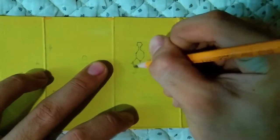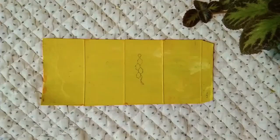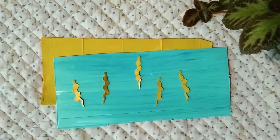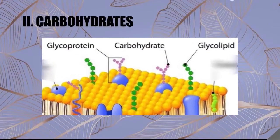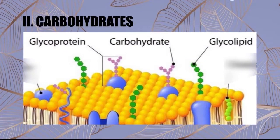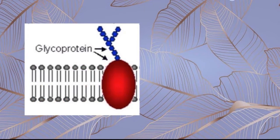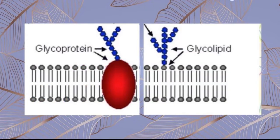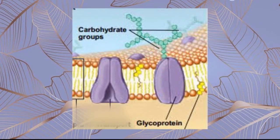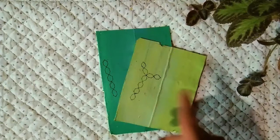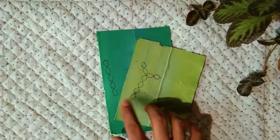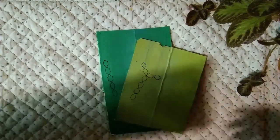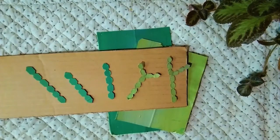Taking the cholesterol, draw its shape on the painted cardboard and cut. Remember that they can be either straight or branched, just like the reference.